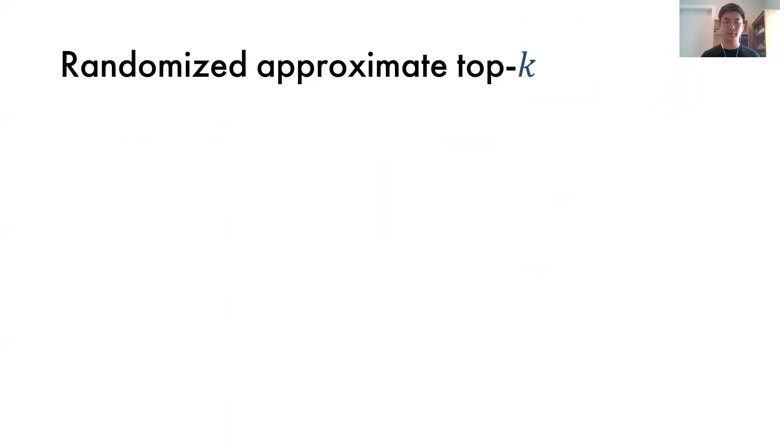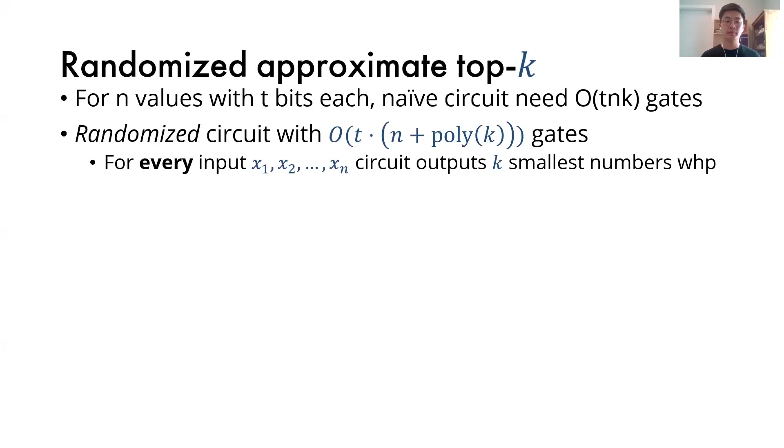Next, we look at the top-k selection part. Notice that if we want to select the top-k values from a set of n values with t bits each, then the naive circuit to do that needs about t times n times k gates. This becomes slow for large n. Now we propose a randomized circuit with only big O of t times n plus polynomial in k gates. Our algorithm has the property that for every input of n numbers, it outputs the correct k smallest numbers with high probability.